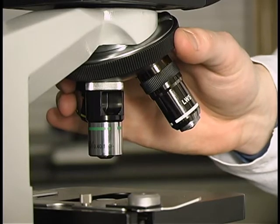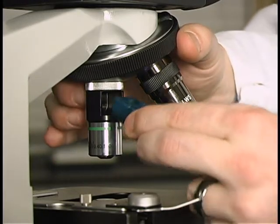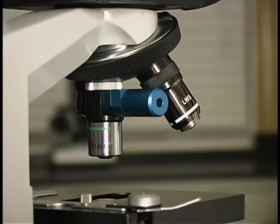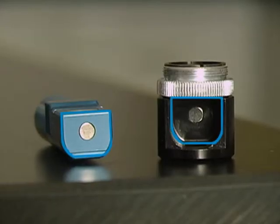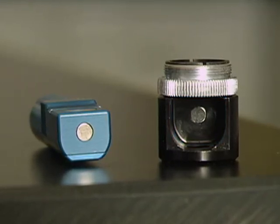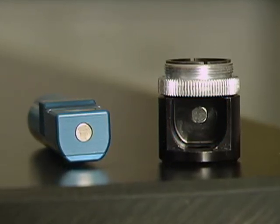Insert the filter set arm into the Paralens Advance body. To ensure that the lenses are correctly aligned, the filter set arm is designed to attach in only one configuration. Do not try to force the arm into the body as this will damage the lenses.